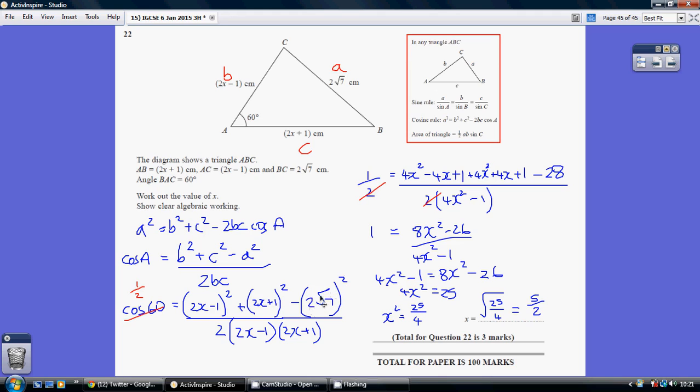Now remember what that is. That's 2 times root 7 times 2 times root 7. Root 7 times root 7 is 7. So we've got 2 times 7 times 2, which is 28. And then I've multiplied out the bottom as well. When you multiply out this pair of brackets, you get 4x squared minus 1.